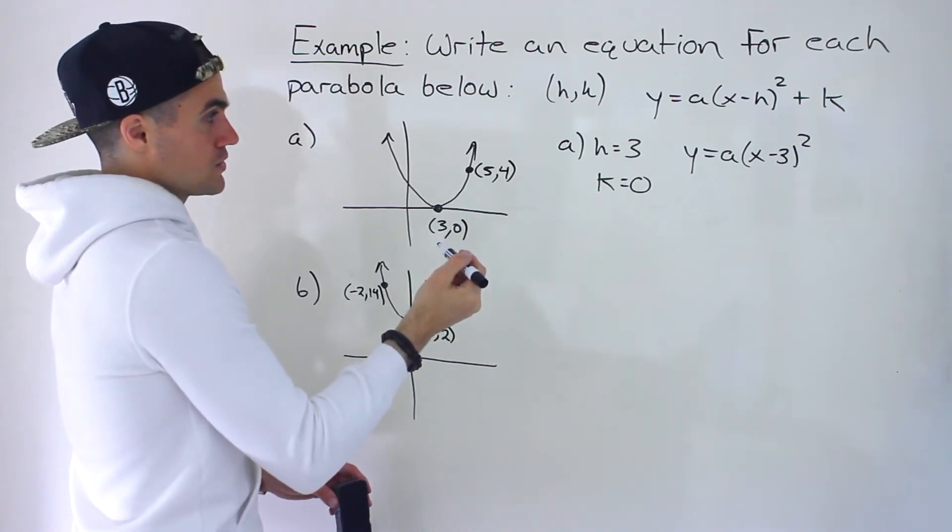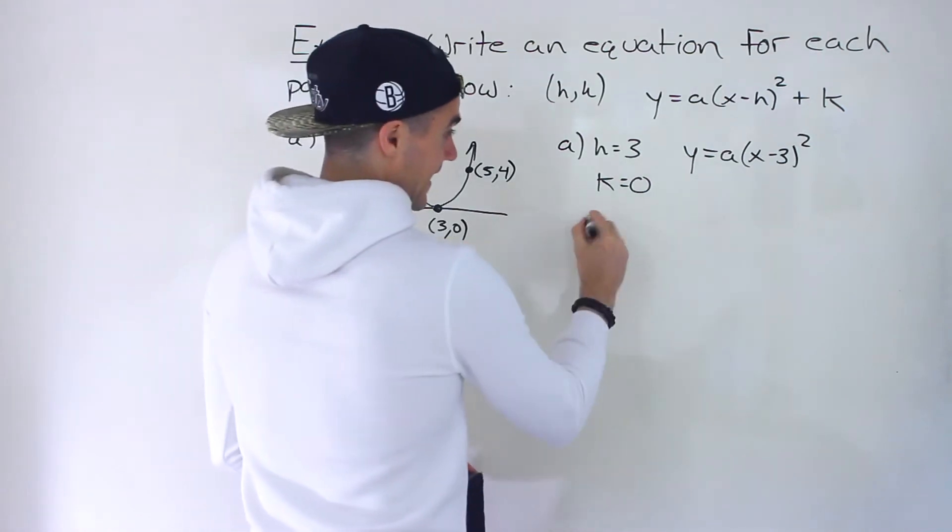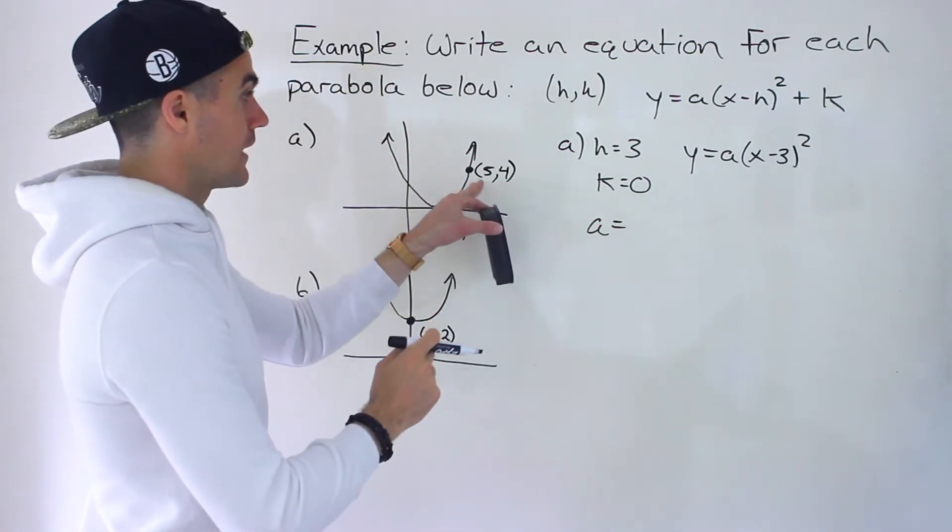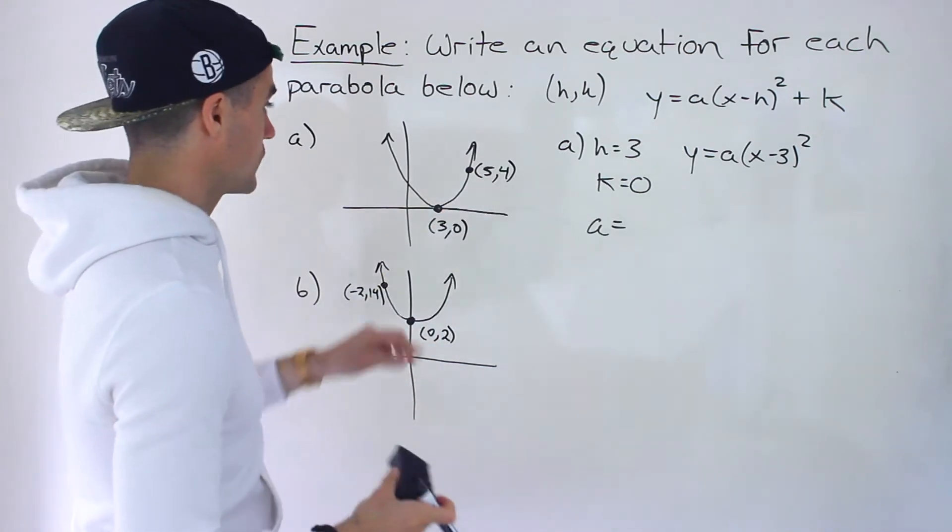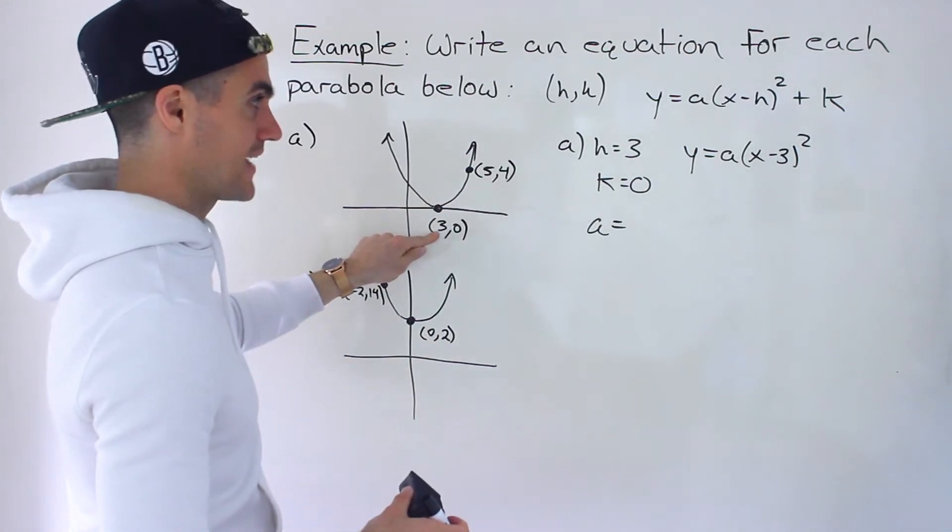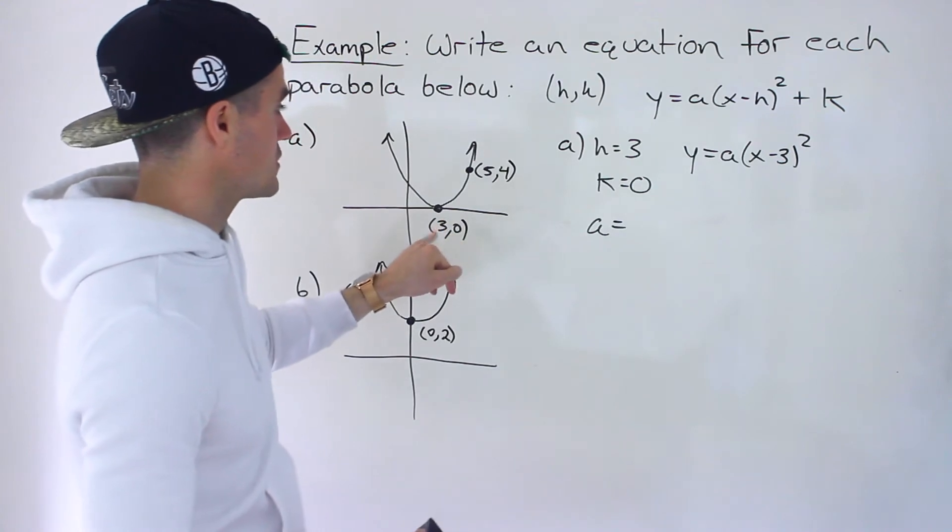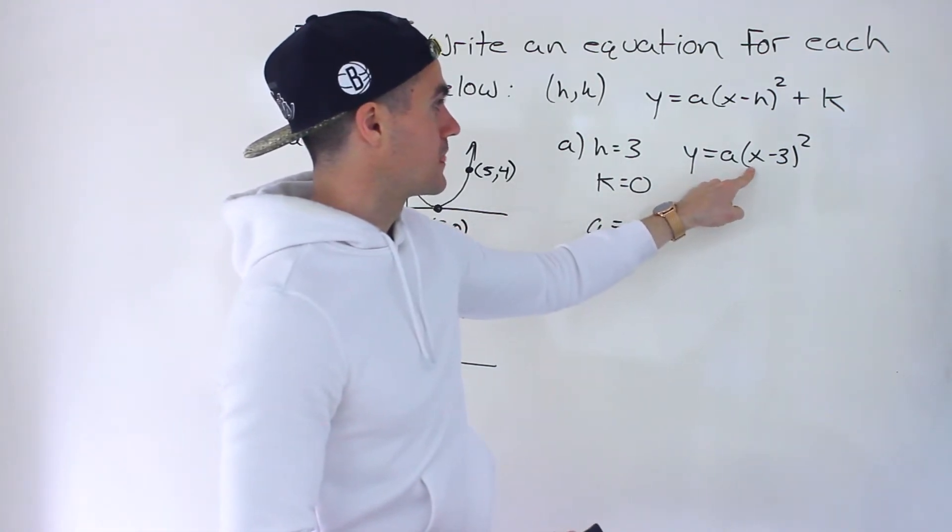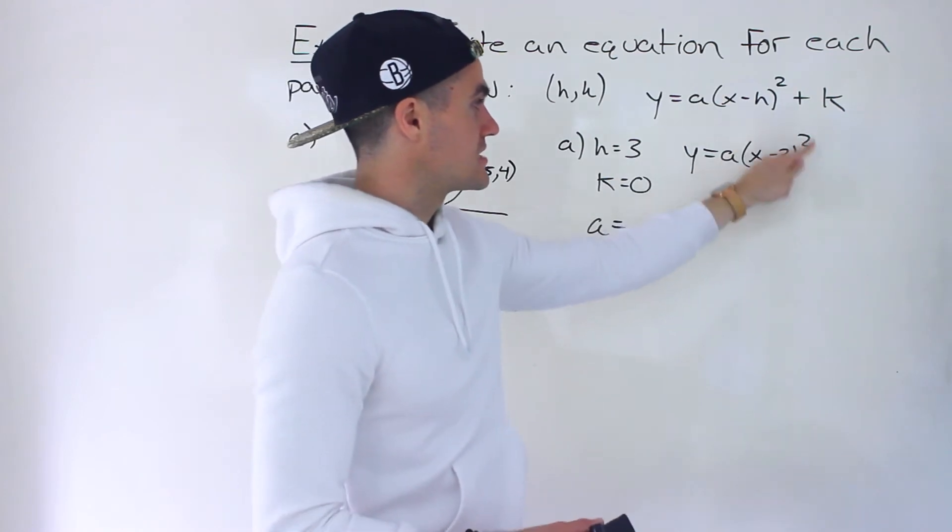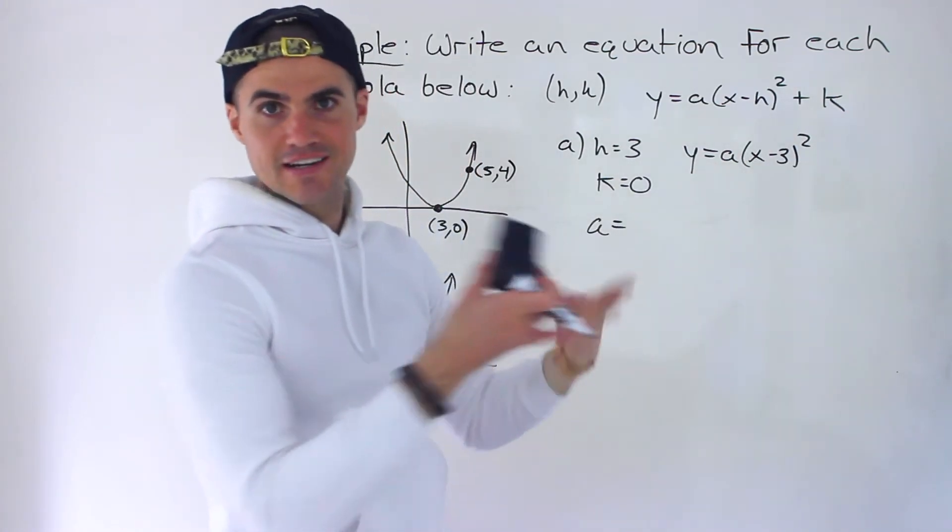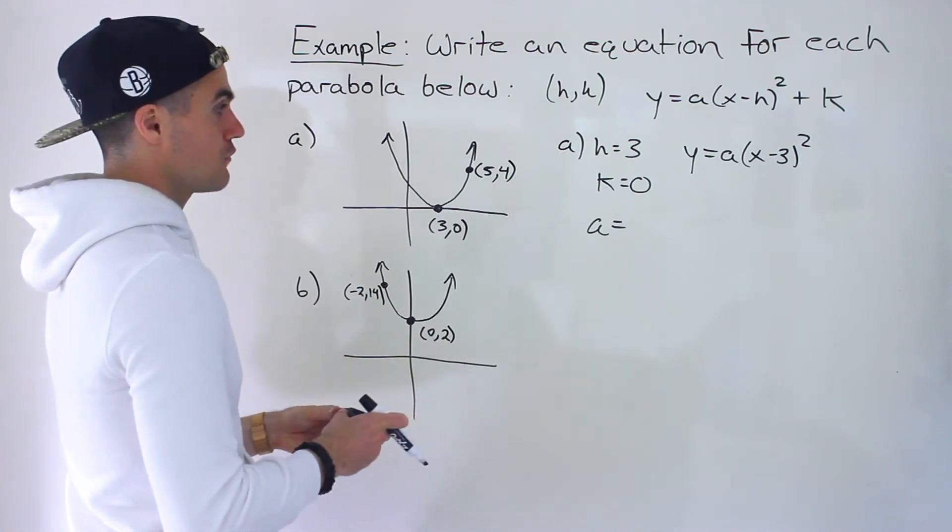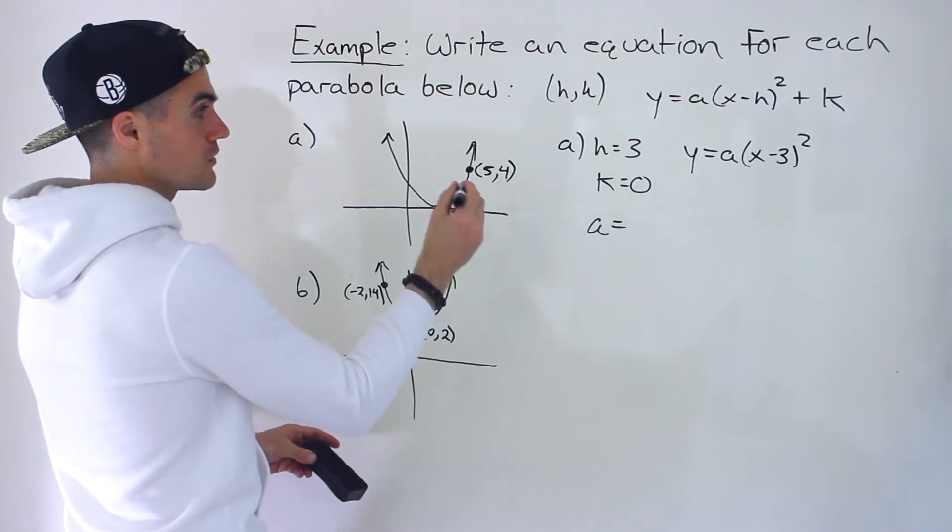And so now what we can do is we have to solve for that A value still. But we can do that with the other point. Now you have to use the other point. You can't, for example, use the vertex again to solve for the A value. Because notice if you plug in the vertex, what's going to happen is if you plug in 3 over here, you'd end up with 0 times the A value. It's going to get rid of the A value. So then we won't be able to solve for it.